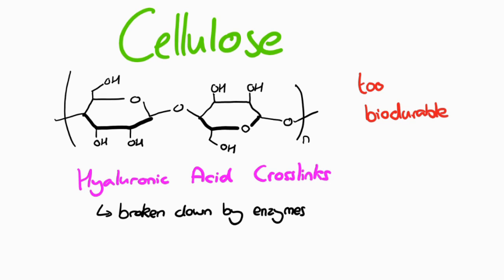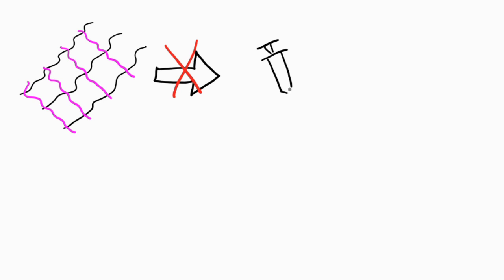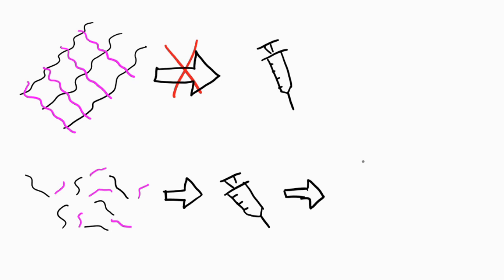Research has also been done into a less invasive way to deliver the gels into deeper parts of the body. Injectable hydrogels. Cross-linked hydrogels are too solid to be injected via a syringe. It's made possible by injecting a solution of the polymer precursors, and then triggering a phase transition to gel once inside the body.